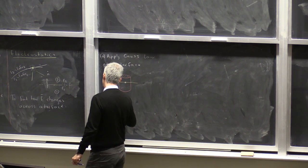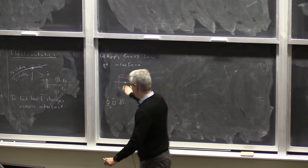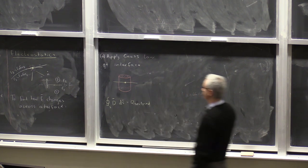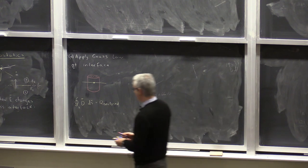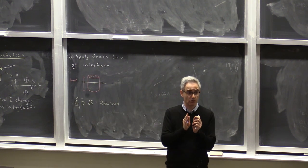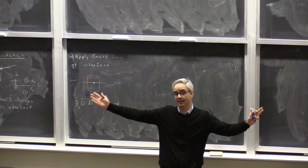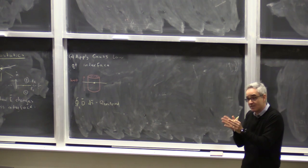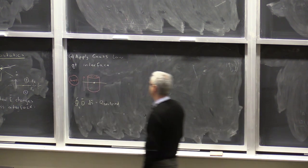Gauss's law says that the closed surface integral—the flux of the electric field through this cylinder—equals the enclosed charge Q. We take the height of the cylinder to go to zero, because we're trying to extract the boundary condition. A cylinder that is very long would not do, because it would correlate fields very far from the interface. Taking this limit h going to zero expresses the physical idea of correlating fields that are really close to the interface, left and right.